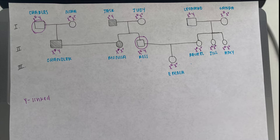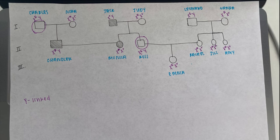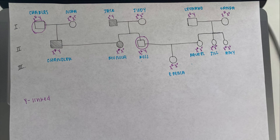One example of an inheritance pattern for this pedigree that would not work is Y-linked. Y-linked traits are passed down through males from their father. Chandler's father does not have the Phoebs, so this is one example of why it couldn't work, because there's no way Chandler could have it either.